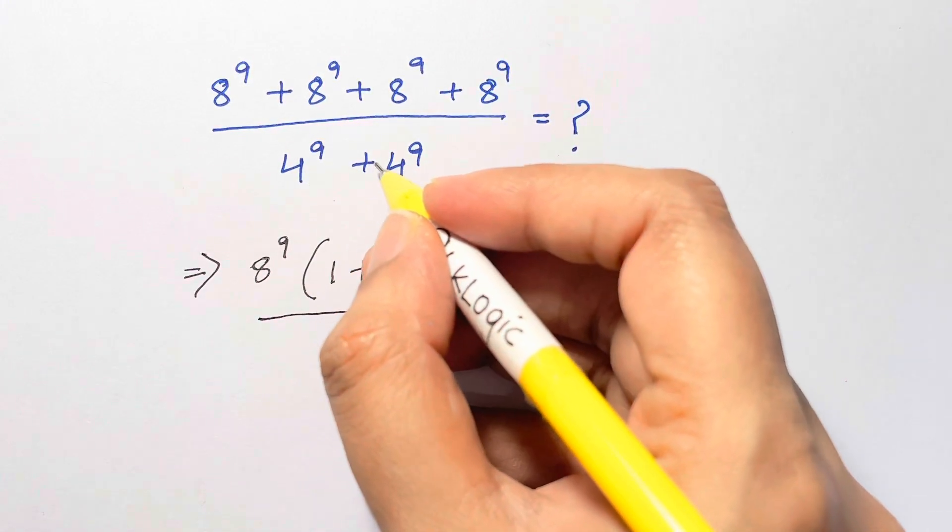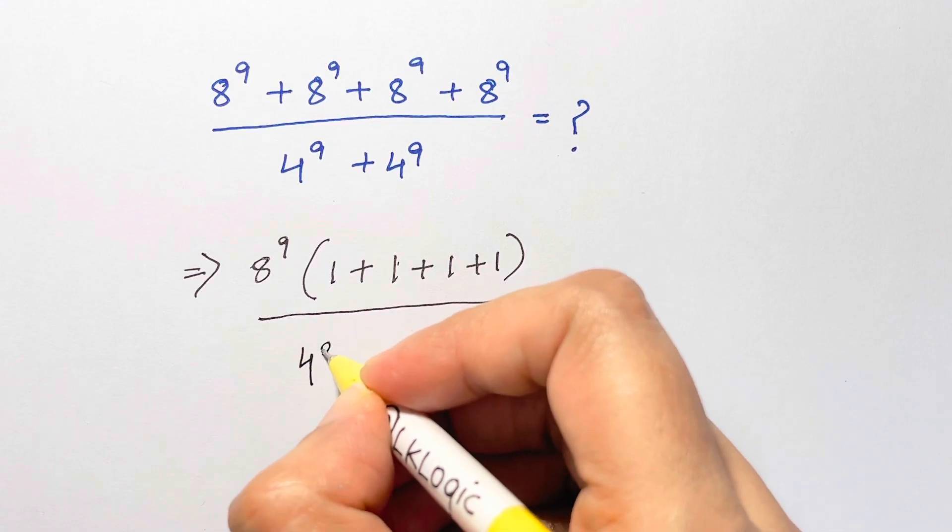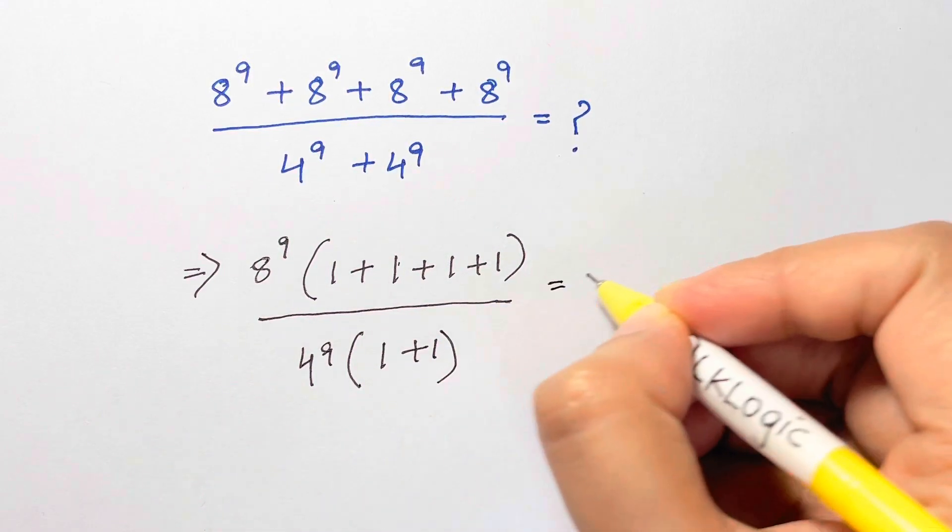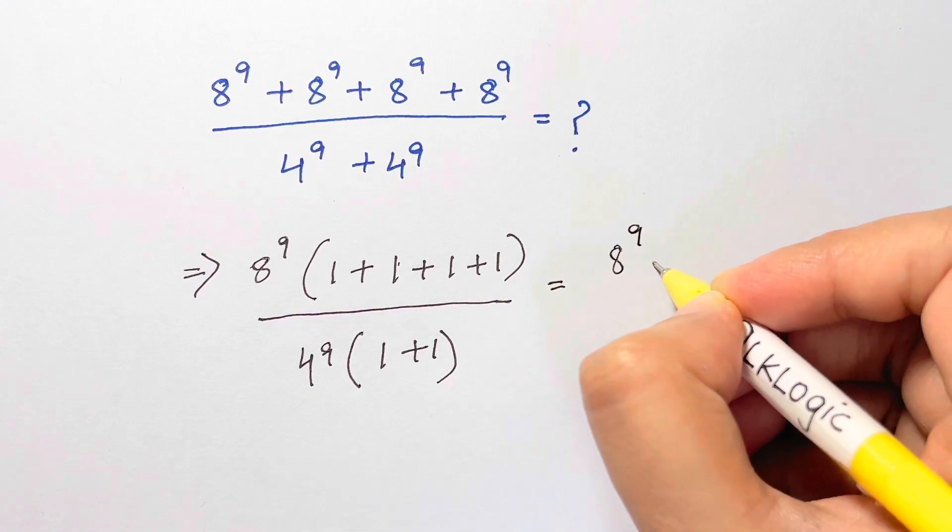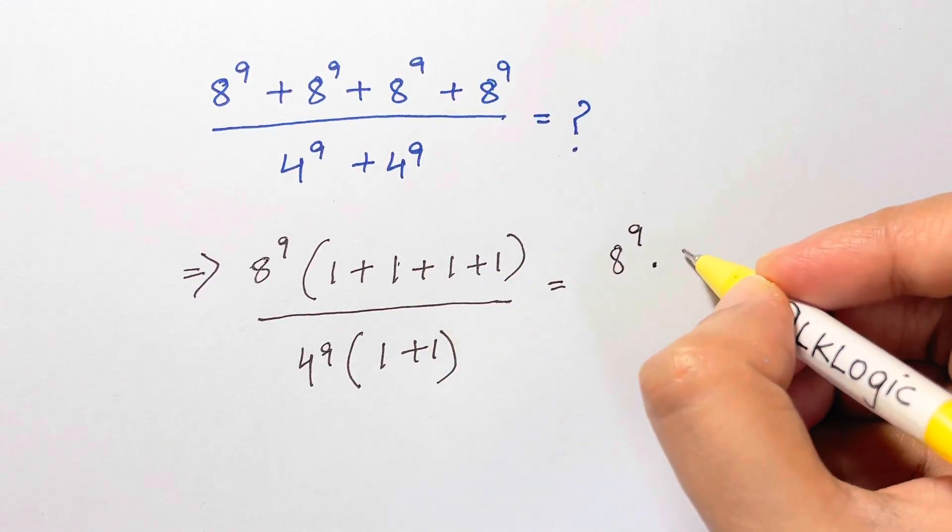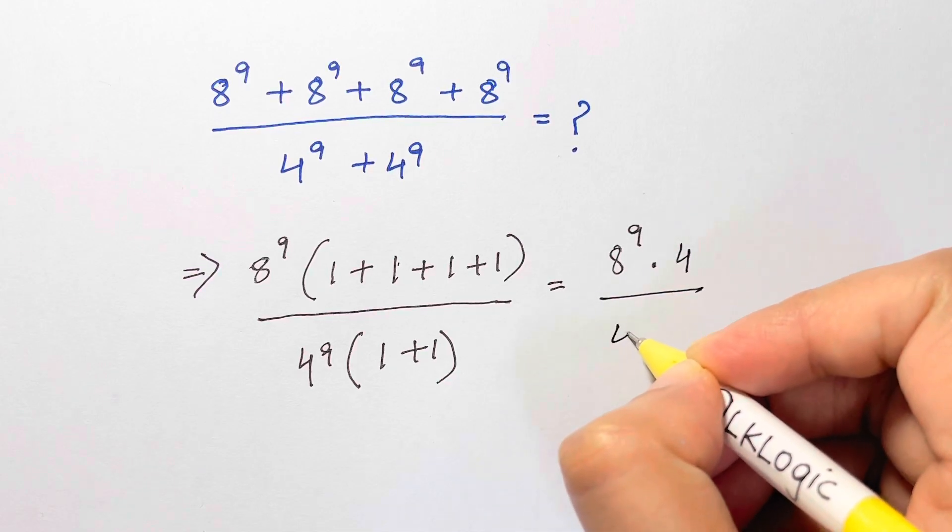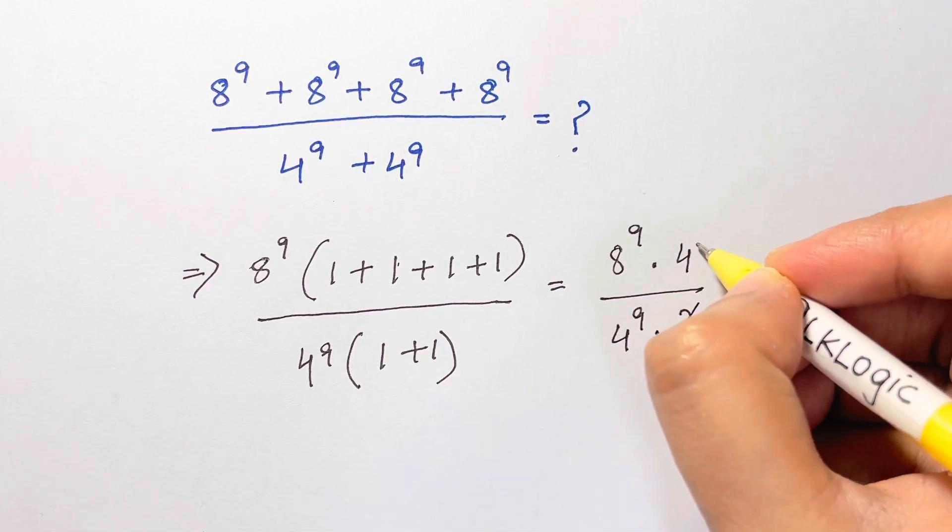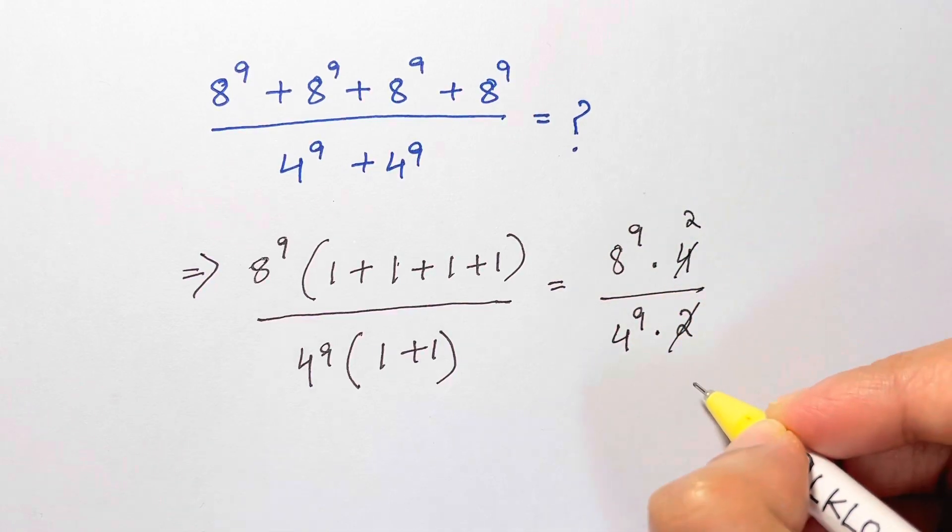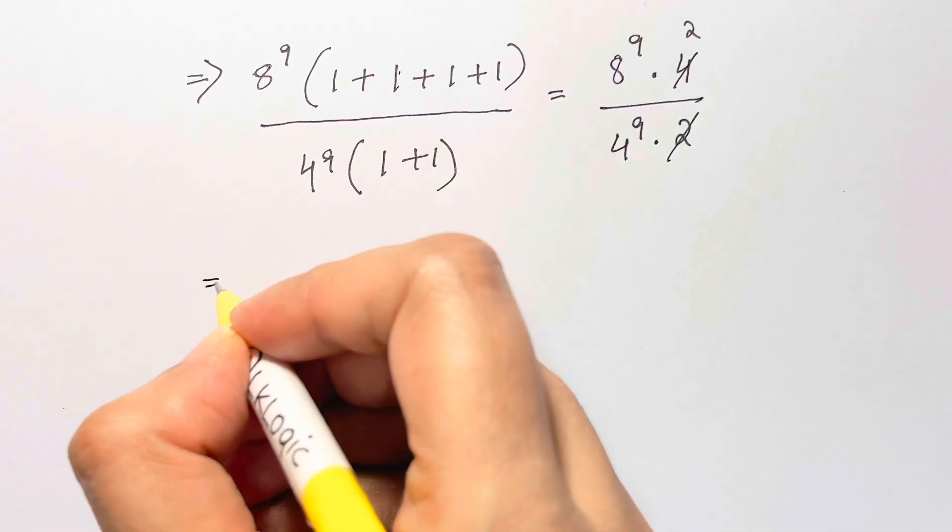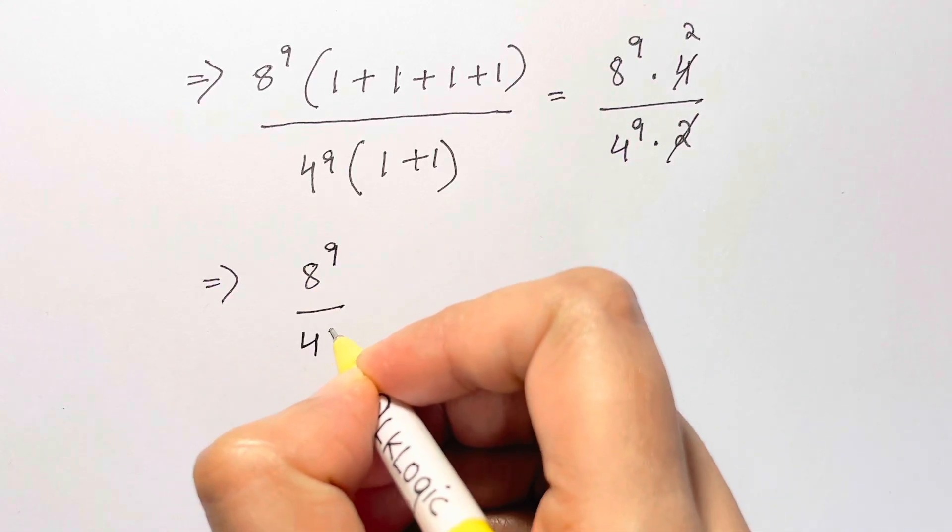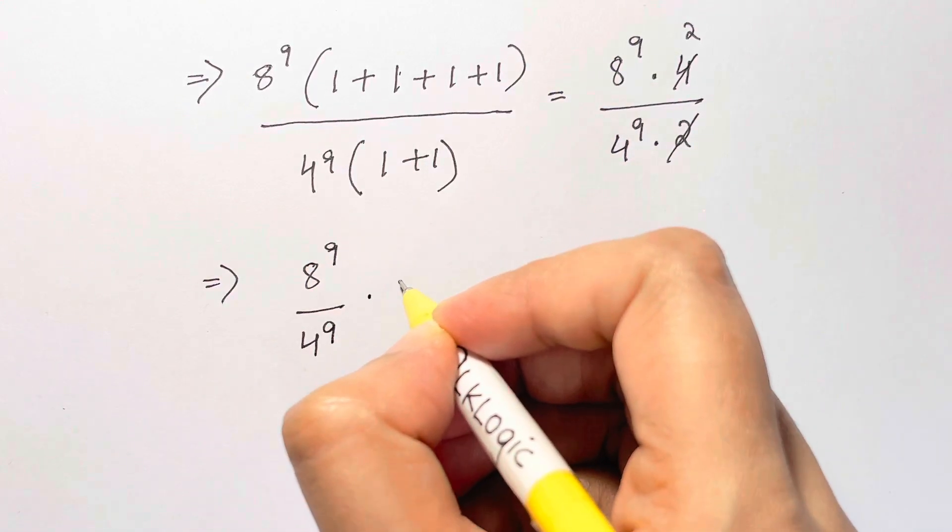Then you have 4 to the power of 9, take it out common, so you're left with 1 plus 1. Now you have 8 to the power of 9 times 4, over 4 to the power of 9 times 2. So we have 8 to the power of 9 over 4 to the power of 9, times 2.